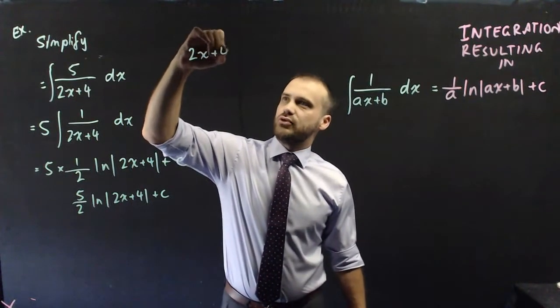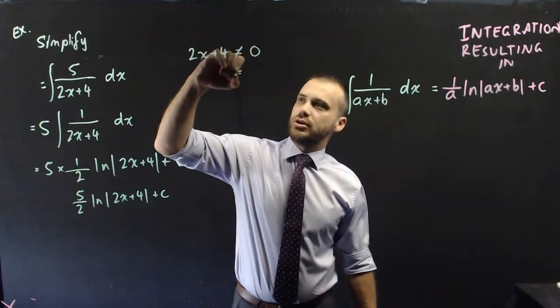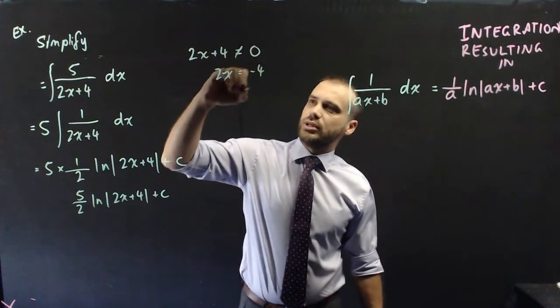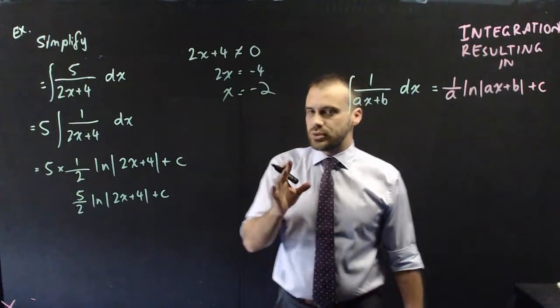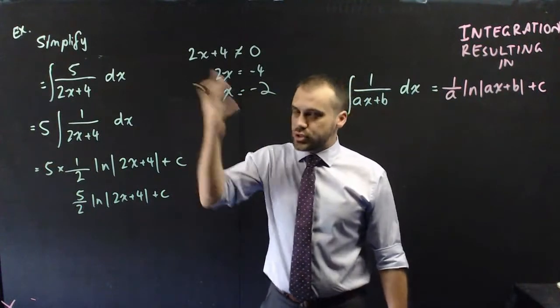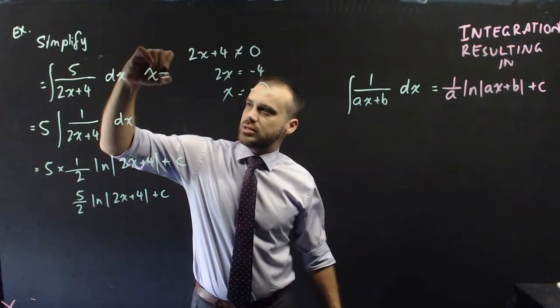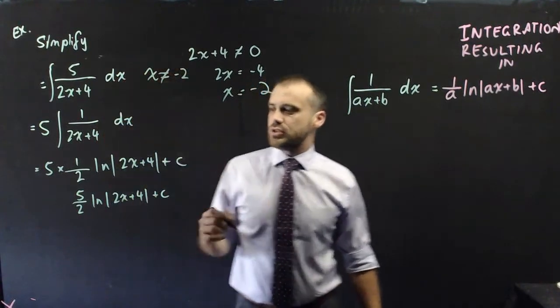So, in other words, 2x plus 4 cannot equal 0, which means 2x cannot equal negative 4, which means x cannot equal negative 2. So, really, when this question is expressed, it should have a little x is not equal to negative 2.